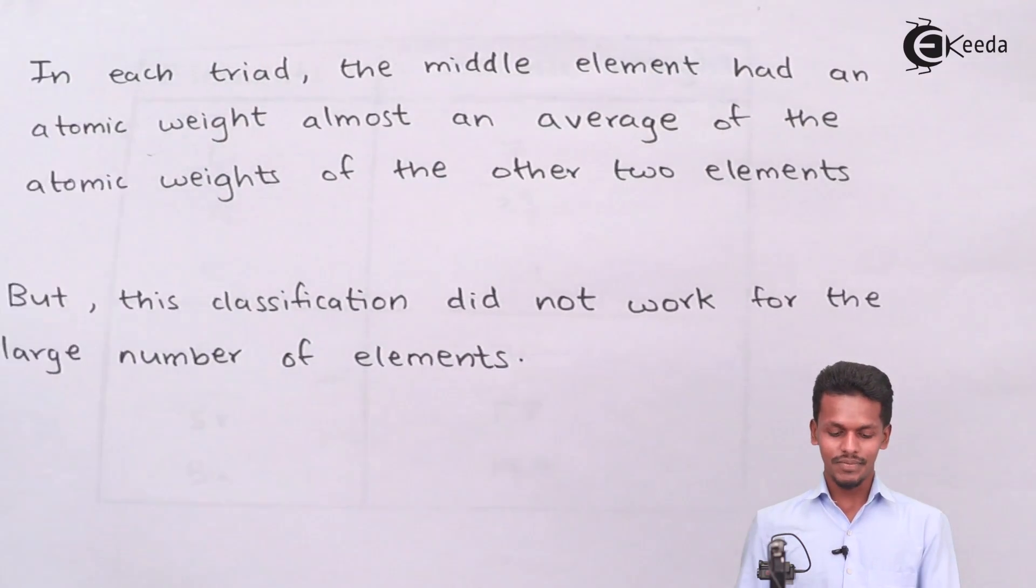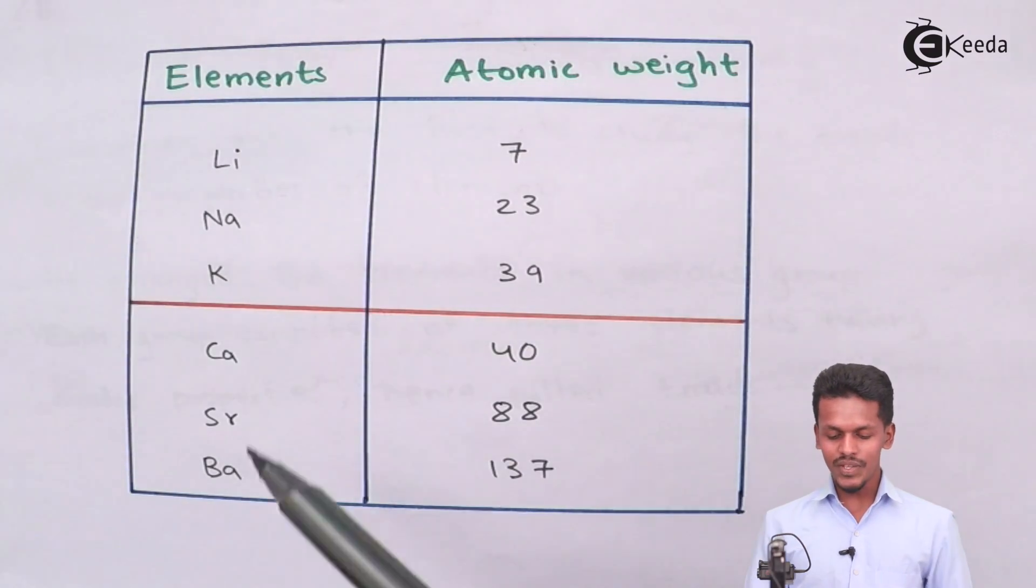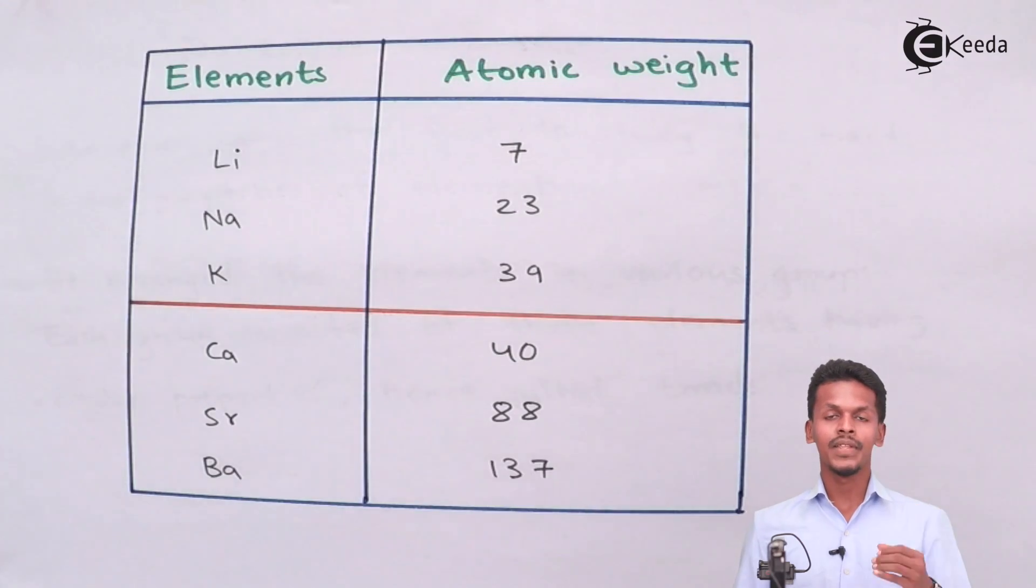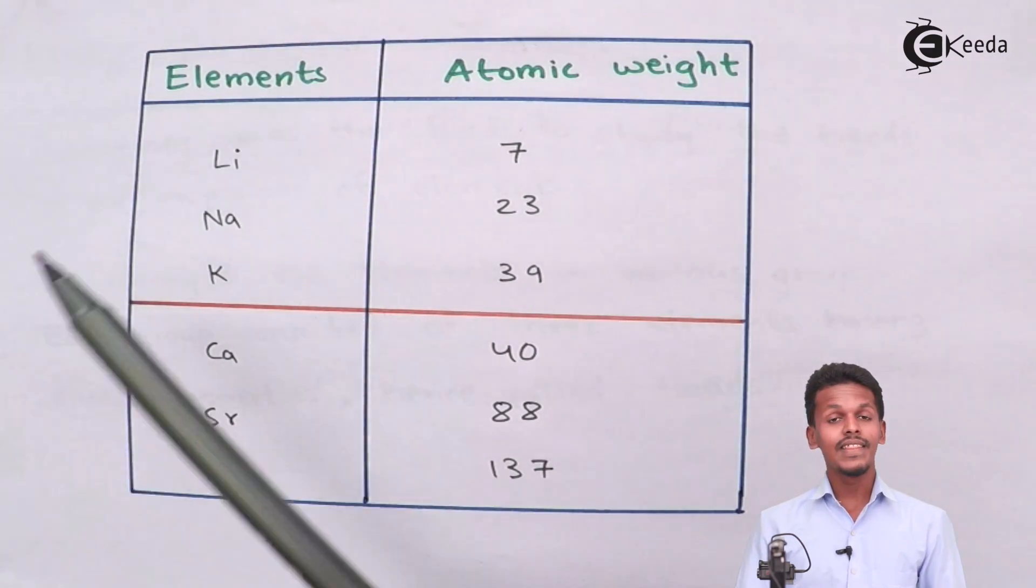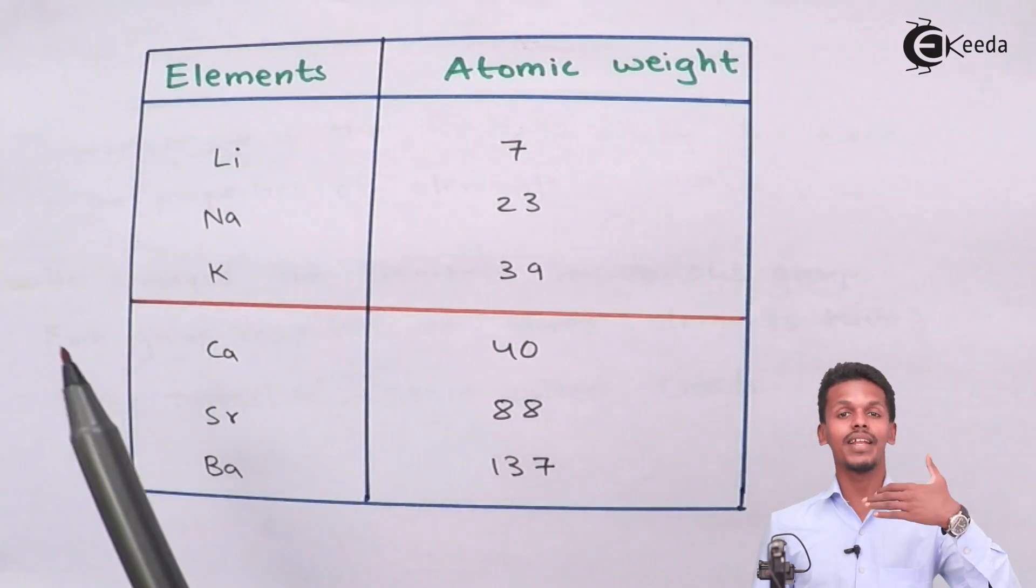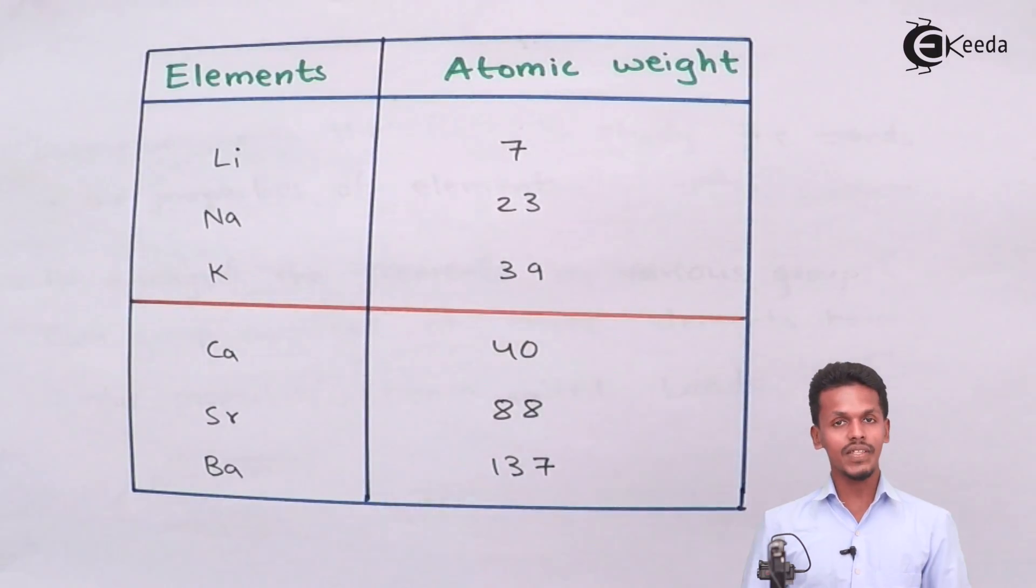What does this imply? This implies that suppose if we are talking about lithium, sodium and potassium as a Dobereiner triad, the middle element is basically sodium. And it has been found that if we calculate the average of the other two elements, that is lithium and potassium.